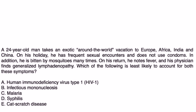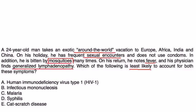Vignette one: A 24-year-old man takes an exotic vacation to Europe, Africa, India, and China. He has frequent sexual encounters without condoms and is bitten by mosquitoes many times. On return, he has fever and his physician finds generalized lymphadenopathy. The question asks which is the least likely cause. This is a good question because lymphadenopathy is not part of malaria, so malaria is the least likely diagnosis — all the other choices can present with lymphadenopathy.